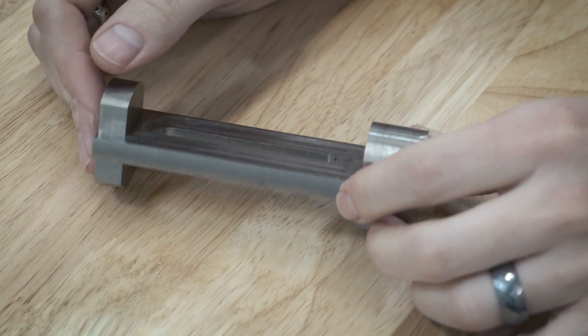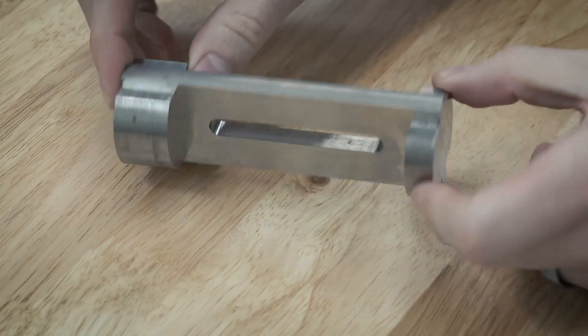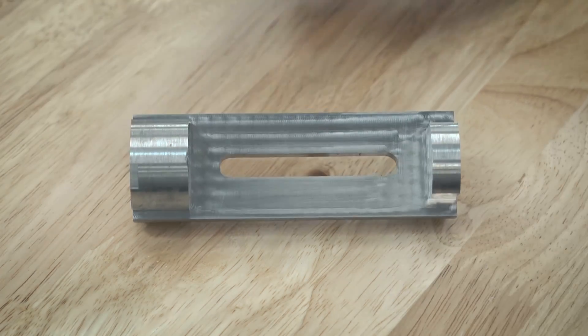Here is what the part looks like with the top and the bottom machined. Now I just need to machine the ends, however I need to make some kind of fixture or jig to do that.